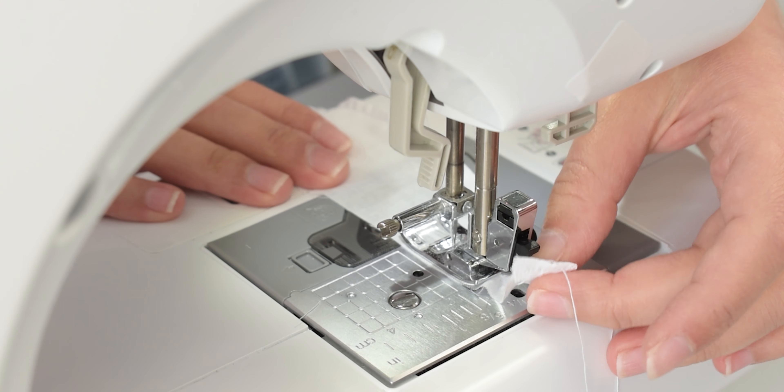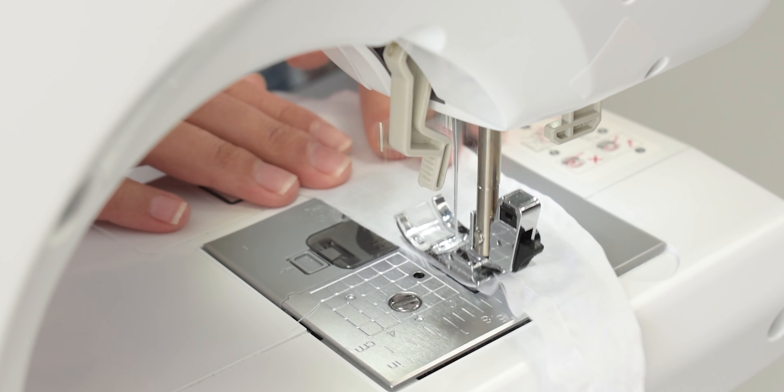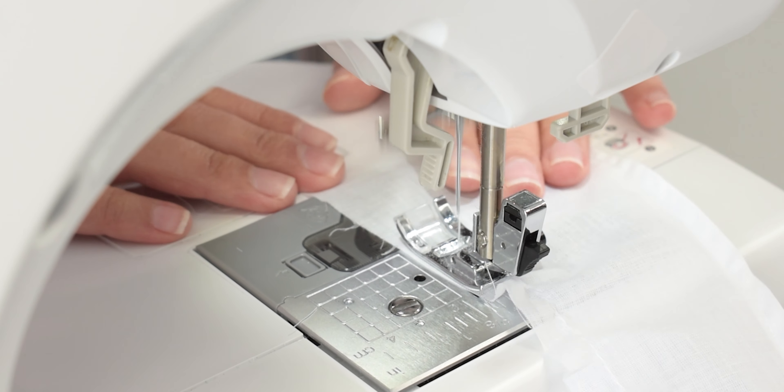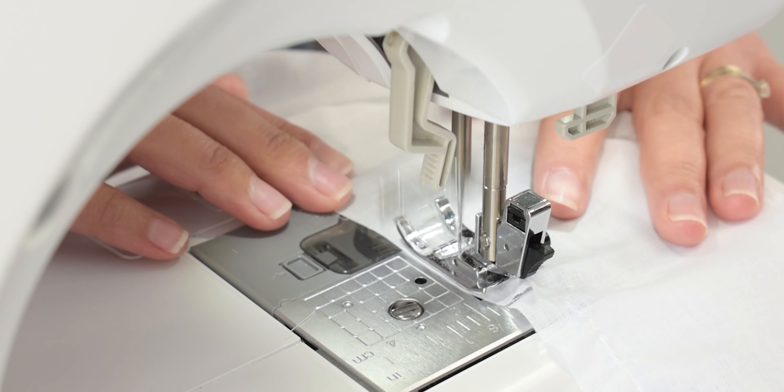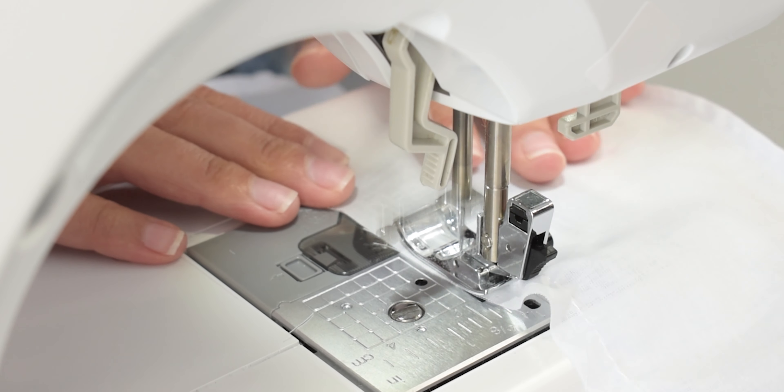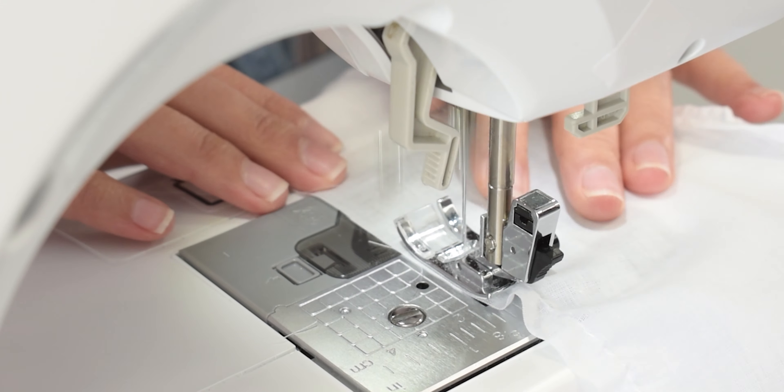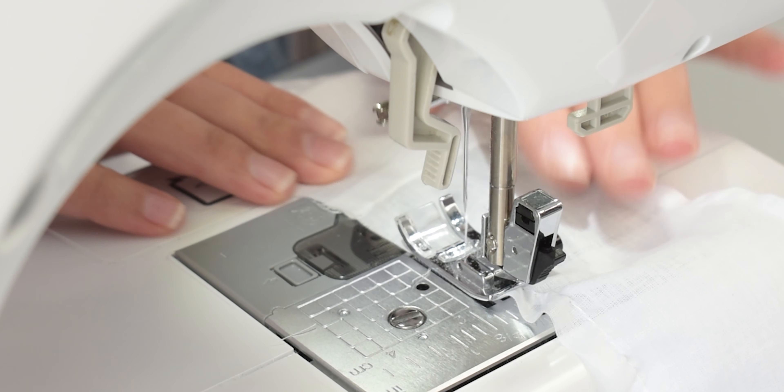Then, I did a long stitch at a low tension along the notched edge with extra thread at the start and end for gathering. Normally, you should sew two parallel long stitches, but I prefer to do just one. Having two stitches will come in handy if one of the threads breaks.